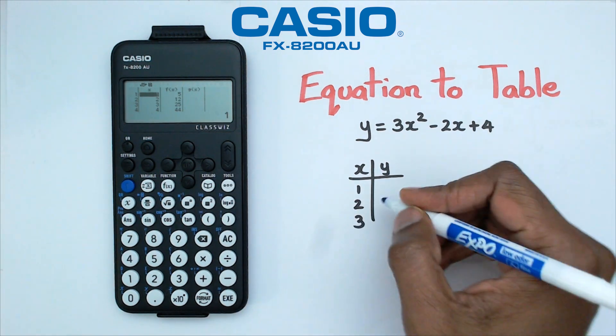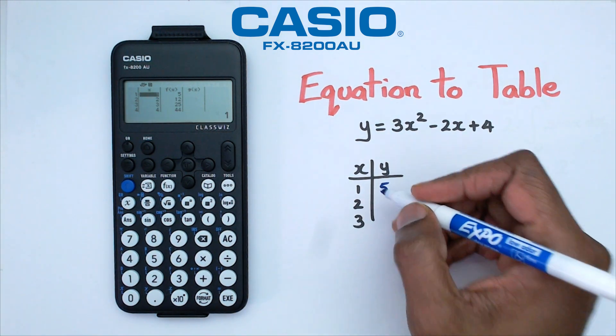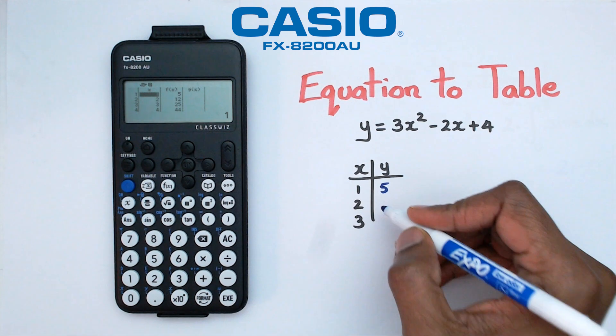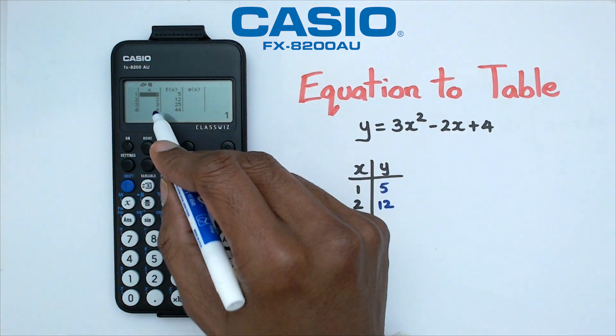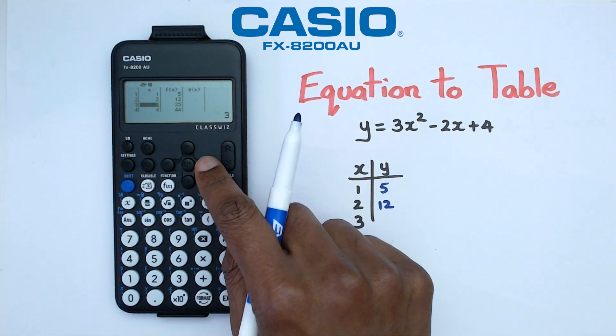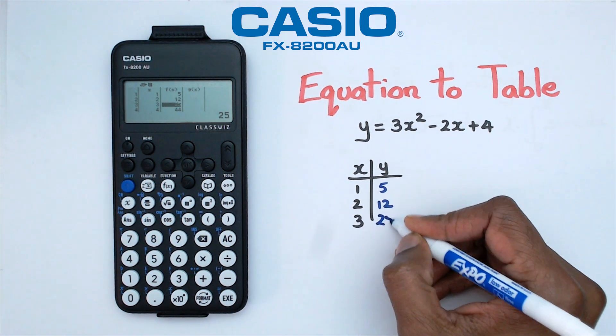So when x equals to 1, y is equal to 5. When x equals to 2, y is equal to 12. When x equals to 3, which is right here, and you can see that y is equal to 25.